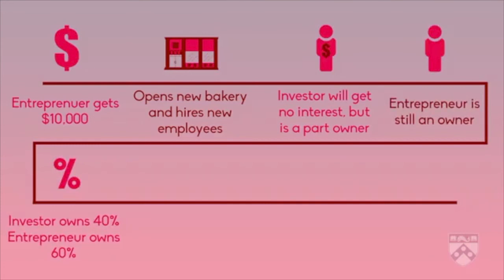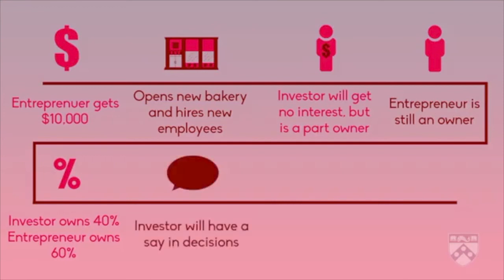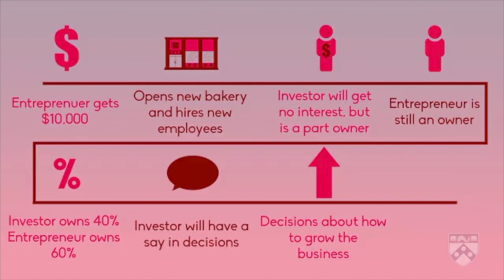Also, as a part owner, the investor gets some control of the business. For example, the investor will have a say in decisions that affect the business. These decisions might be about how to grow the business or even whether to sell the business. If the business is sold, the investor will receive 40% of the profits from selling the company.